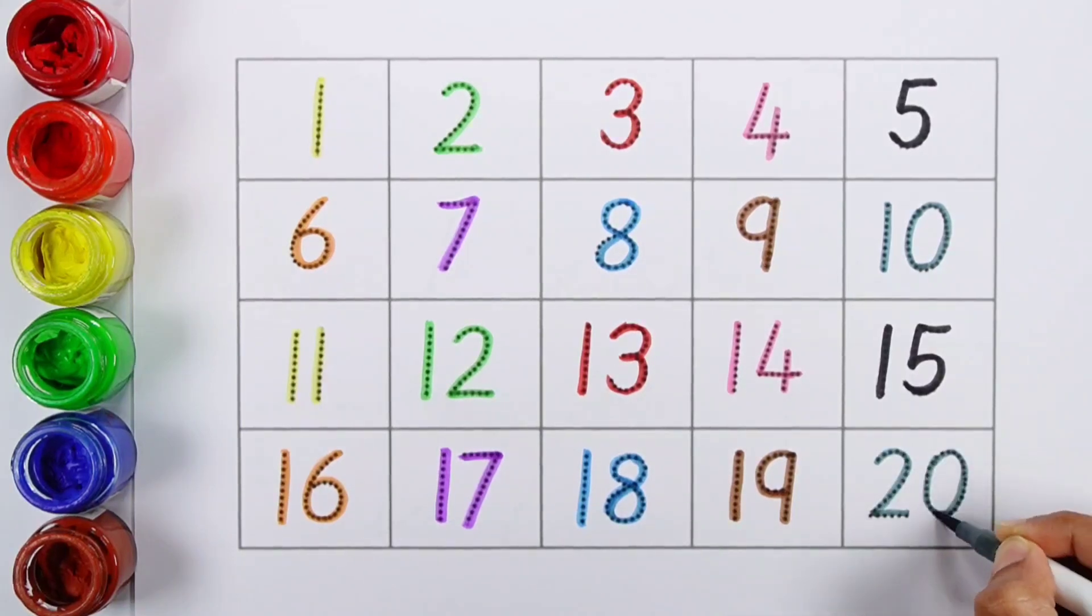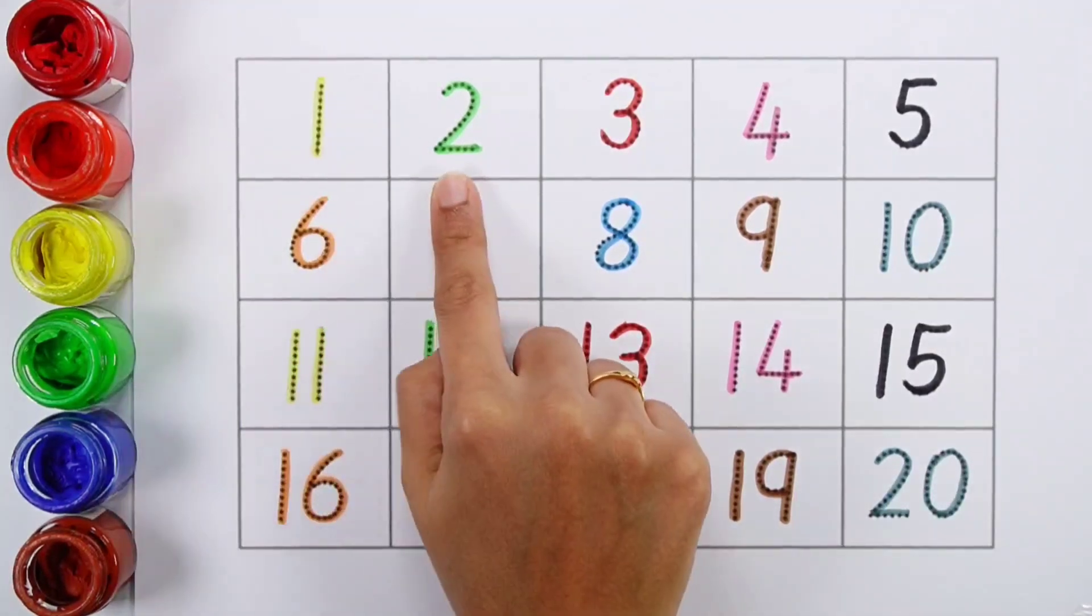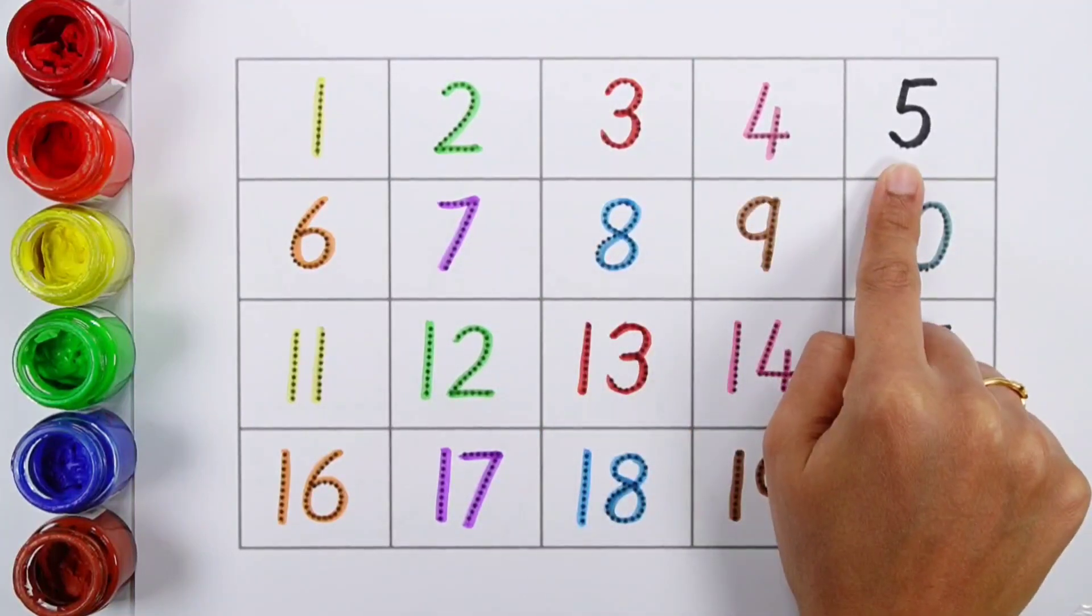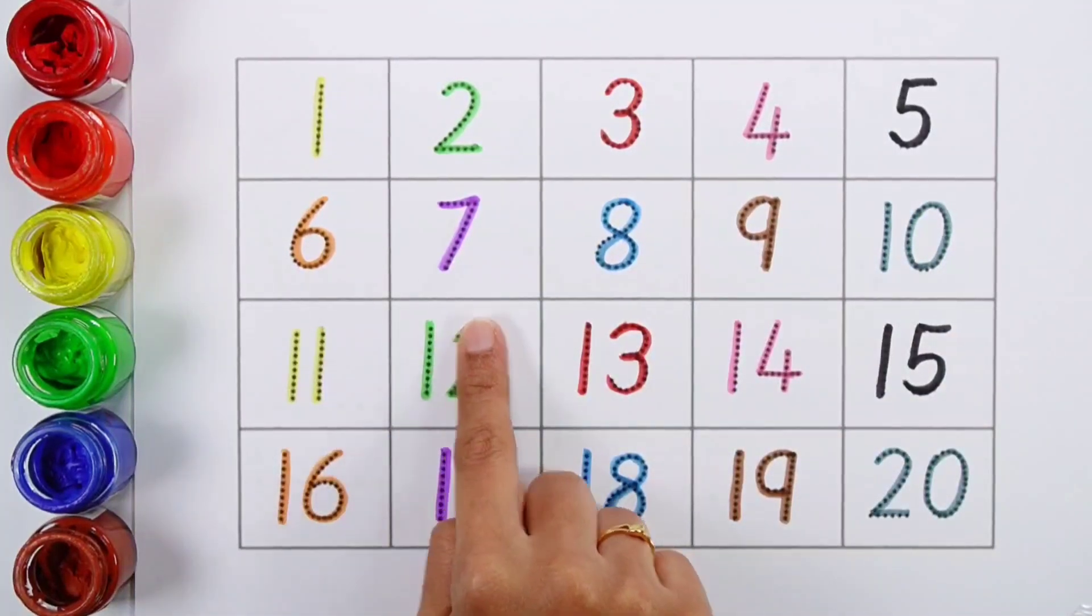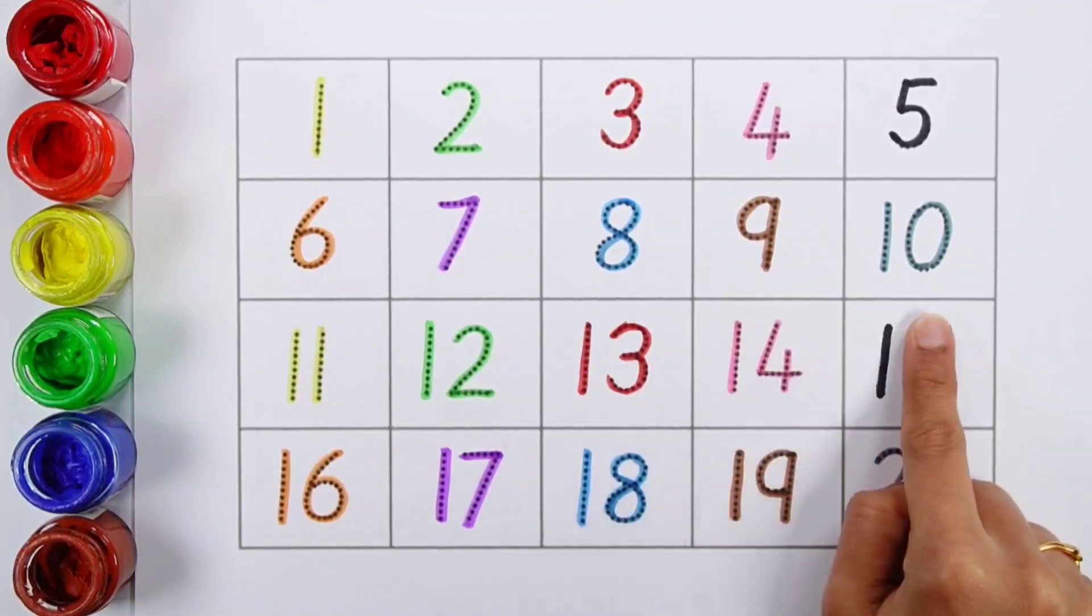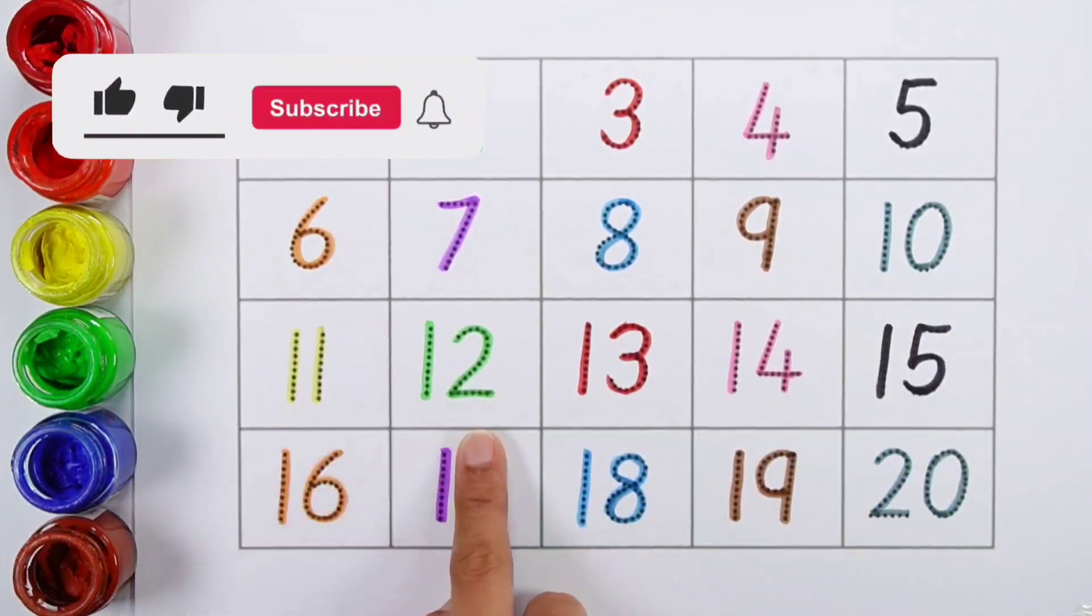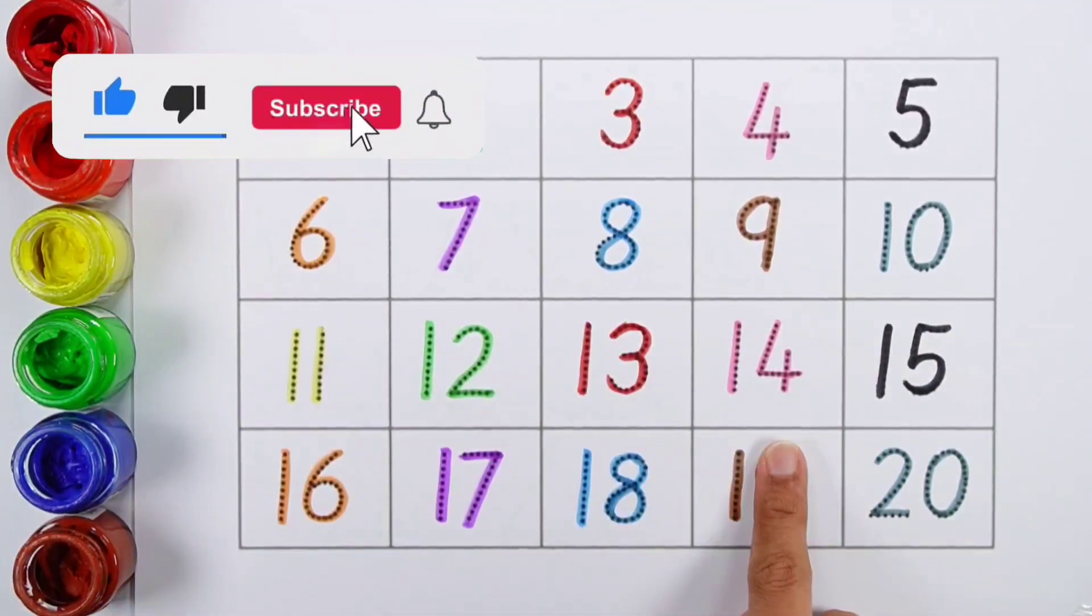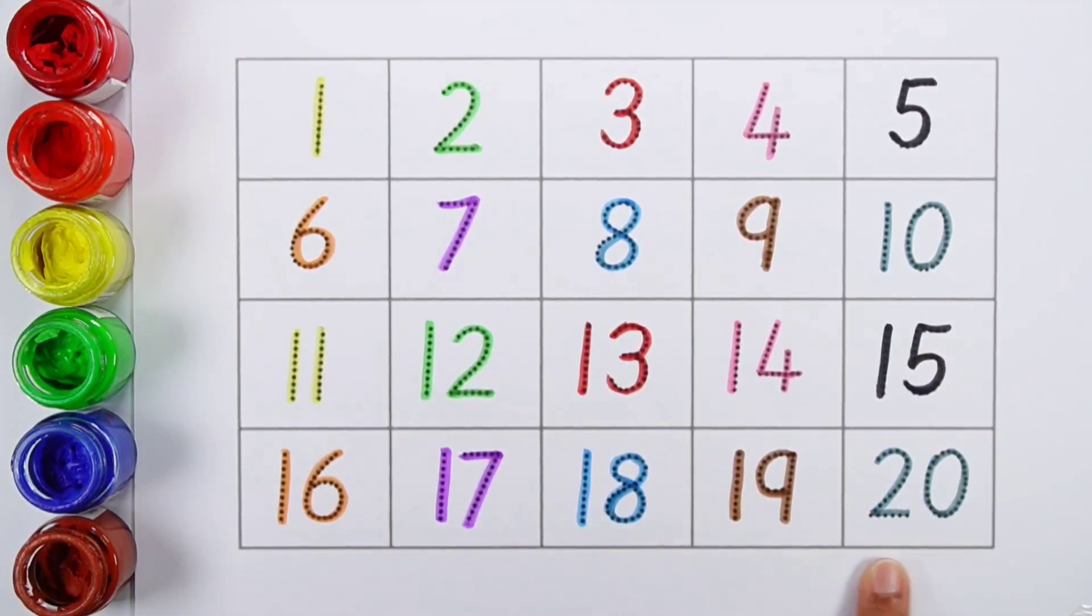One, two, three, four, five, six, seven, eight, nine, ten, eleven, twelve, thirteen, fourteen, fifteen, sixteen, seventeen, eighteen, nineteen, twenty.